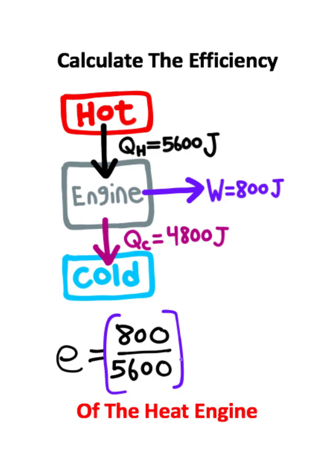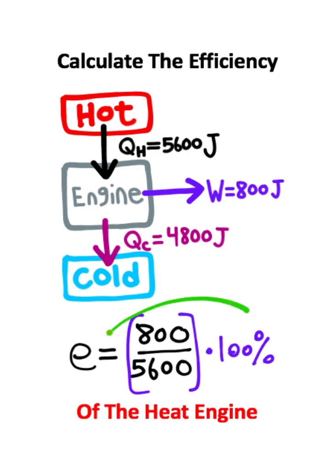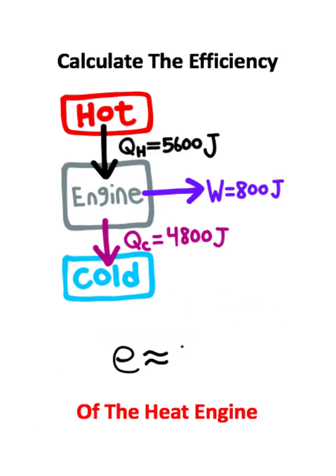Once you have this fraction, you want to multiply it by 100%. If you evaluate this number on a calculator, you should get an efficiency of approximately 14%. Your calculator will say something like 14.285714, but 14% is about the efficiency of this engine.